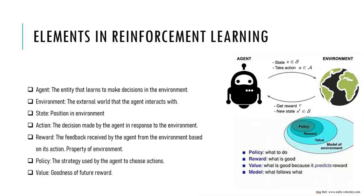Let's understand what elements we have in reinforcement learning. Majorly we have five to six elements, named as agent, environment, state, action, reward, policy, and value. Let's understand one by one what all these elements are.